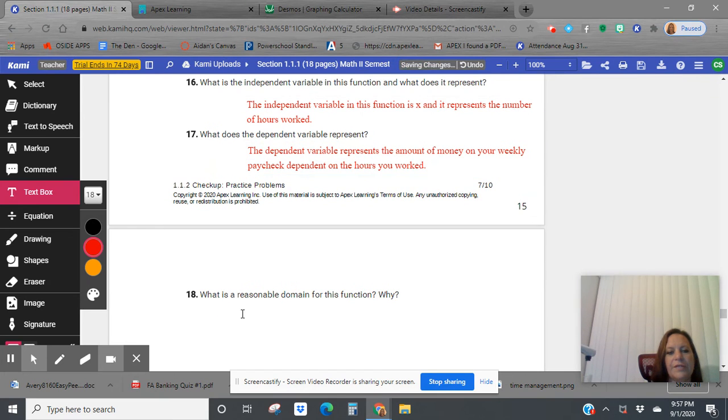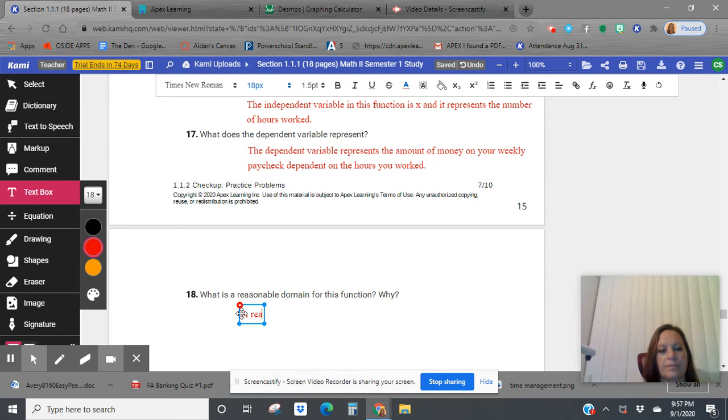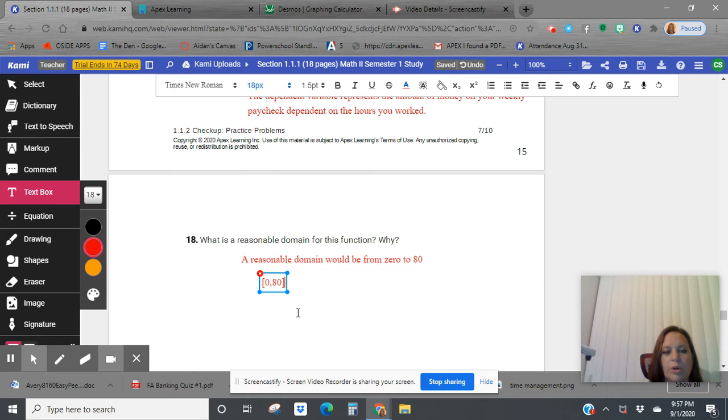What is a reasonable domain for this function and why? You could work zero hours during a work week. Most people work about 40 hours, but people can work overtime. So maybe we could say, what's the most people work? Like 80 hours a week from zero to 80. And so to write that in interval notation, we'd say from zero to 80. I'm including both those values because it's possible you do work both.